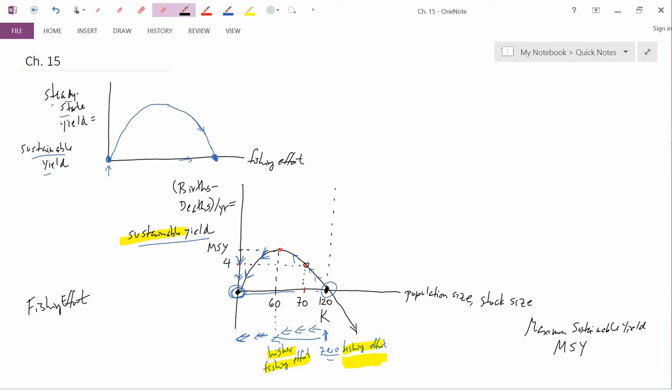The next question we want to ask is, what determines fishing effort? Fishing effort is the effort that humans put into fishing. What are the economic determinants of that? Firms are going to choose fishing effort to maximize profit, and profit has to do with total revenue and total cost.